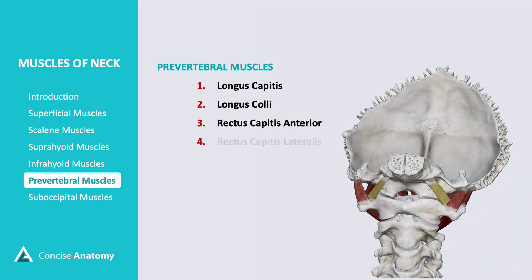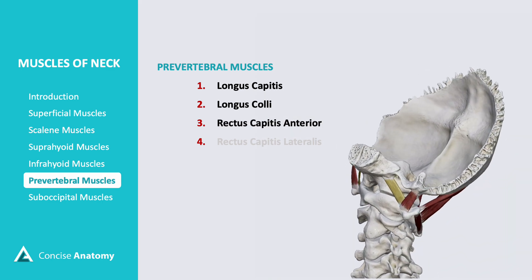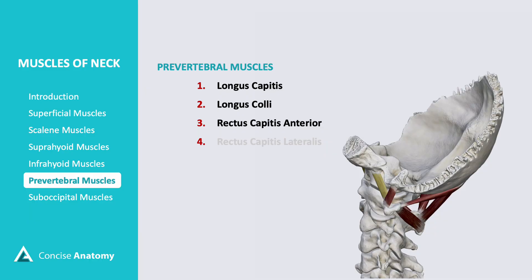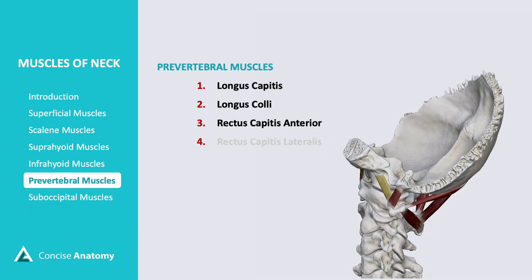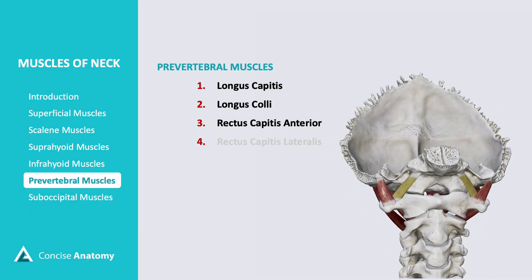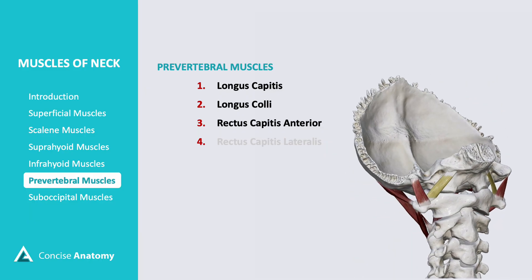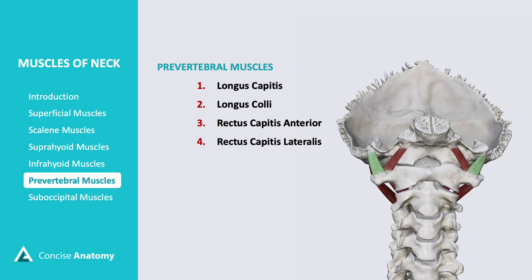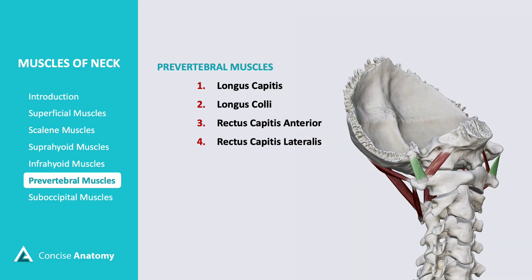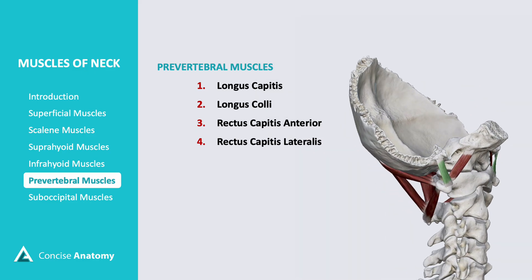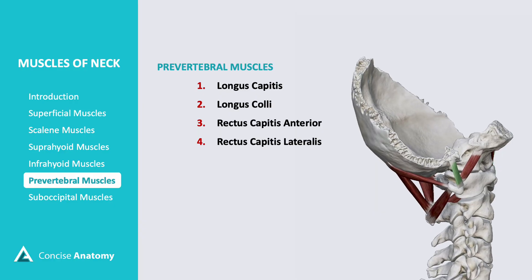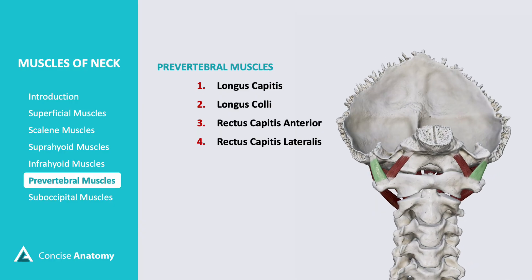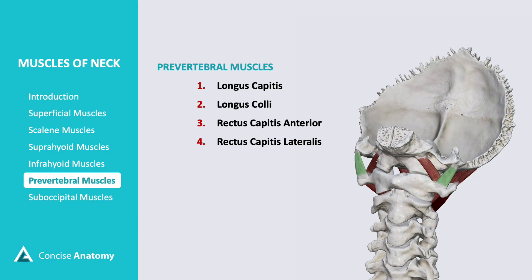Rectus capitis anterior is a small muscle connecting the atlas to the occipital bone, assisting in head flexion and stabilization. Rectus capitis lateralis extends from the transverse process of the atlas to the occipital bone, helping in lateral head flexion and stabilization.